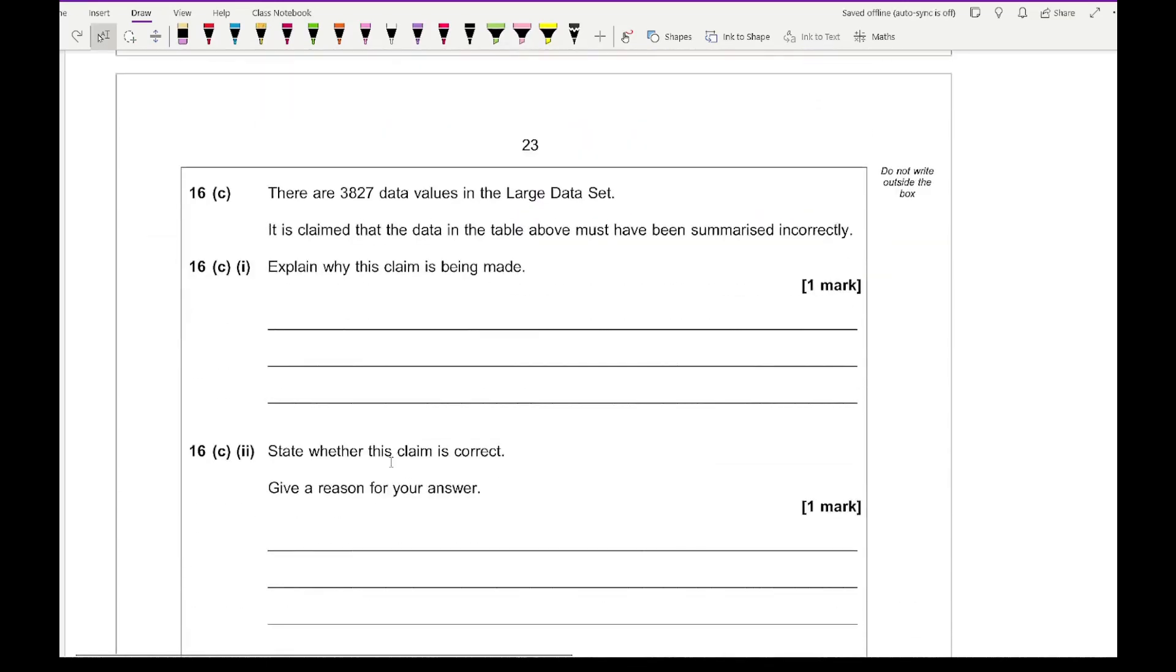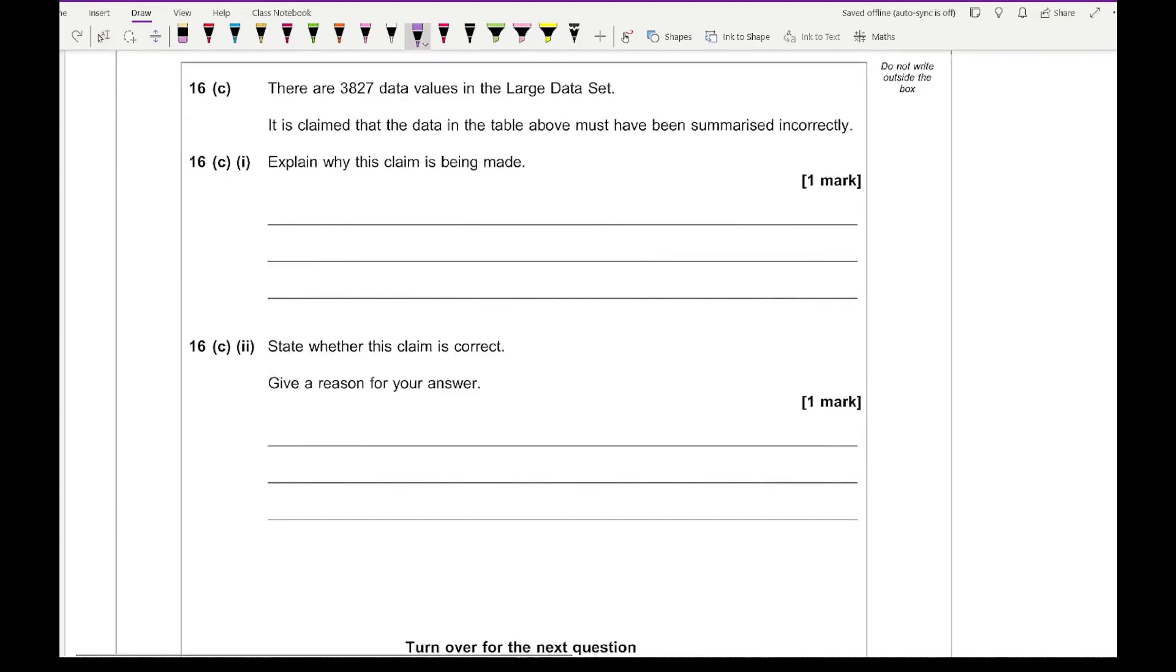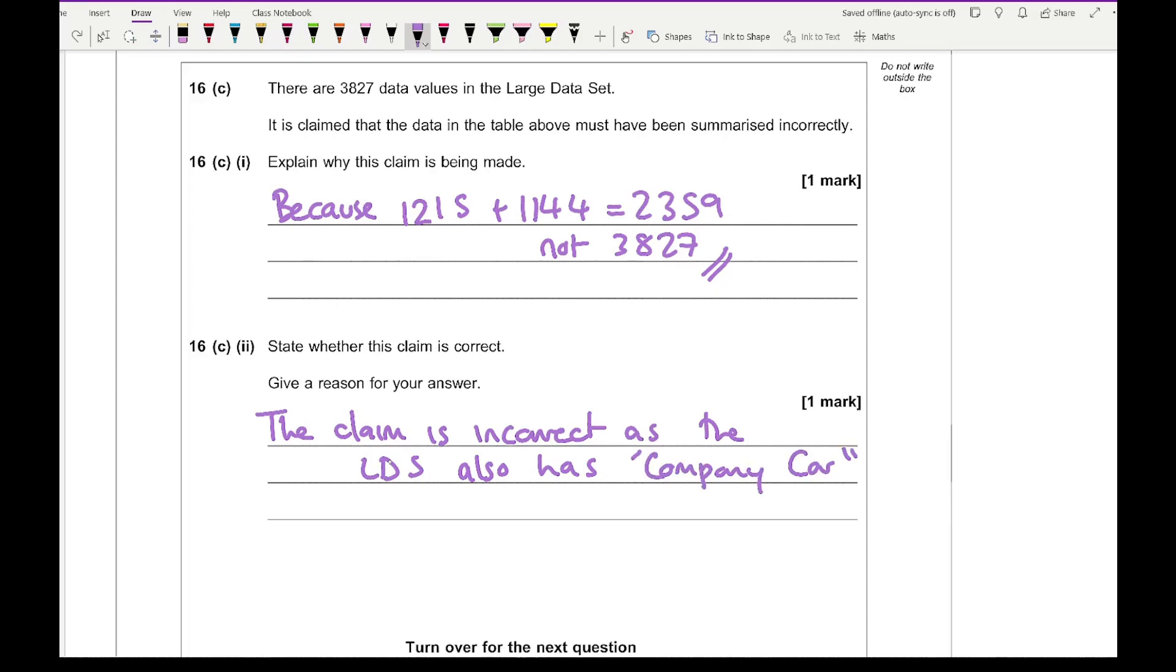Moving on to 16C, there are 3827 data values in the large data set. It is claimed that the data in the table above must be summarized incorrectly. Explain why this claim is being made. It's basically because 1215 plus 1144 equals 2359, not 3827. That's basically why. State whether this claim is correct. Give your reason for your answer. You could say that the claim is incorrect as the large data set also has company car as a category. Something along those lines would be fine.